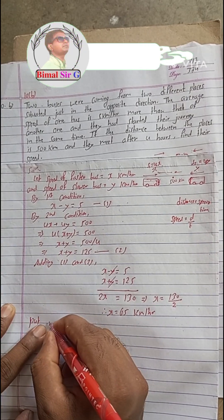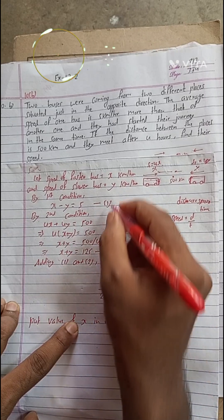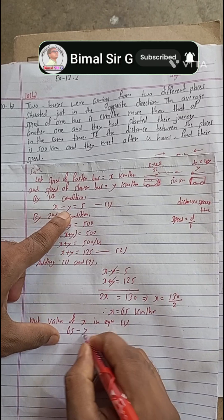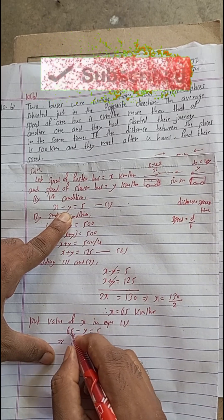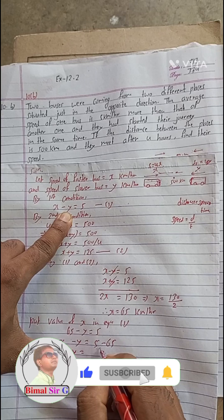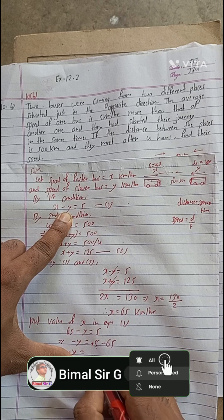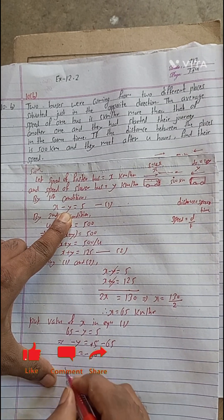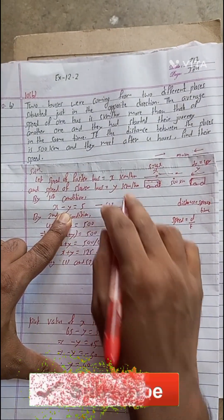Now substitute x equals 65 into equation 1: 65 minus y equals 5. Rearranging, minus y equals 5 minus 65, so minus y equals minus 60. Therefore, y equals 60 kilometers per hour — the speed of the slower bus.